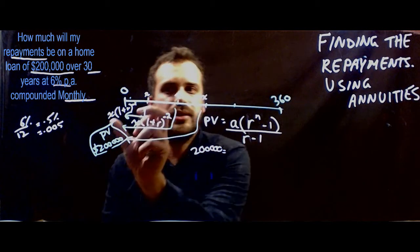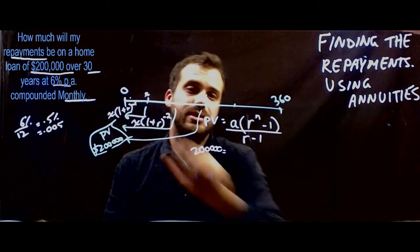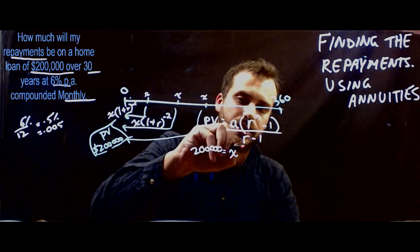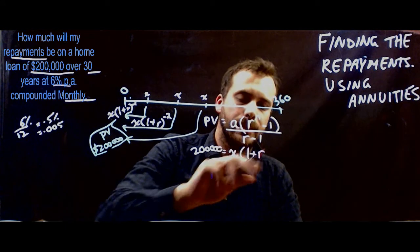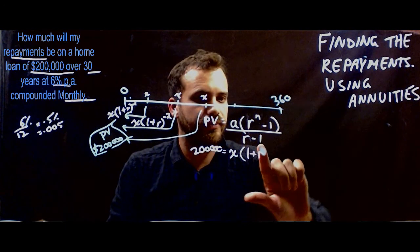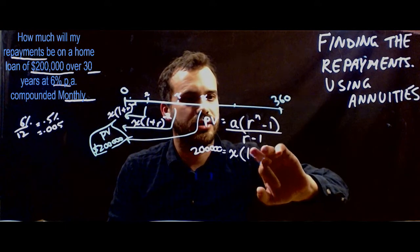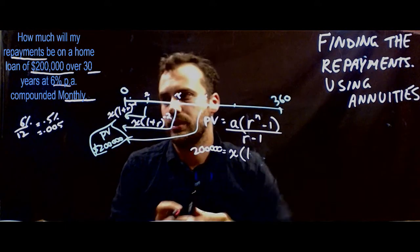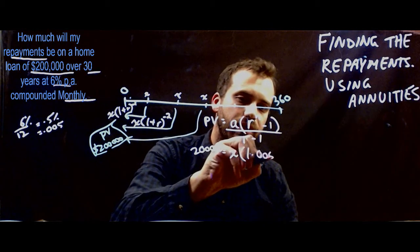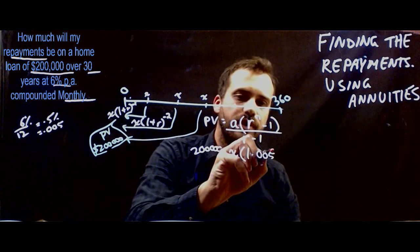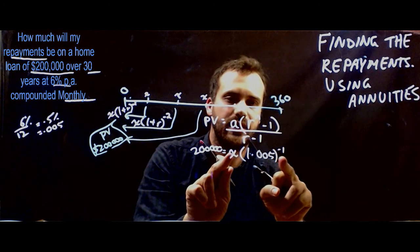The A value, remember our first term is an X. It's X times 1 plus R to the negative 1. X times 1 plus R. Oh, let's not put plus R in there. We know what R is. It's 0.005. So 1.005 to the power of negative 1. Now that's our A value.